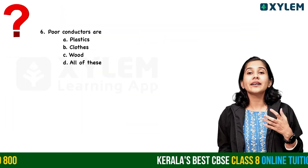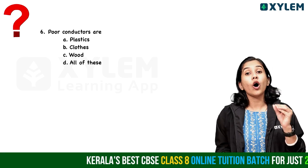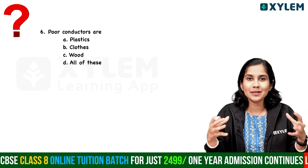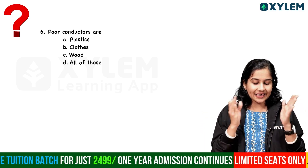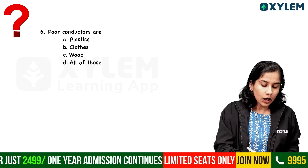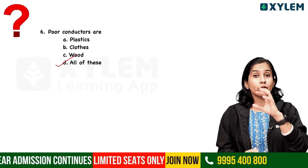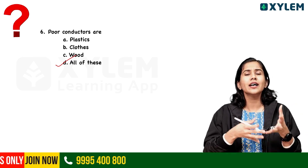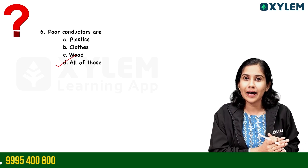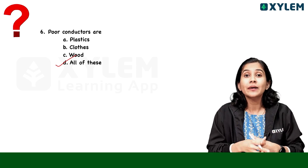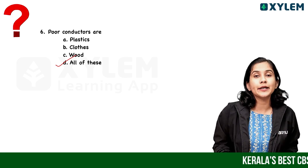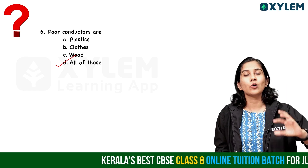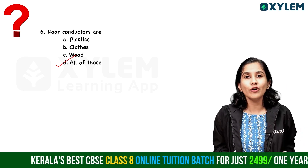Next, sixth question: Poor conductors are — plastics, clothes, wood, or all of these? We know the difference between good conductors and poor conductors. Plastics, clothes, and wood — yes, dried wood — are all poor conductors of electricity. So the answer is all of these.